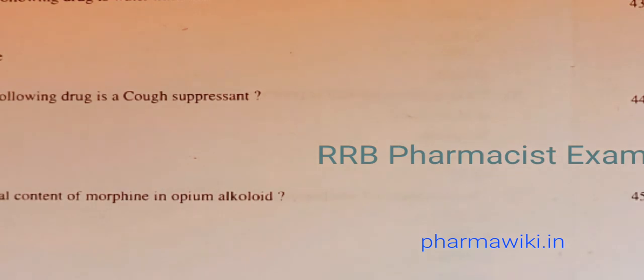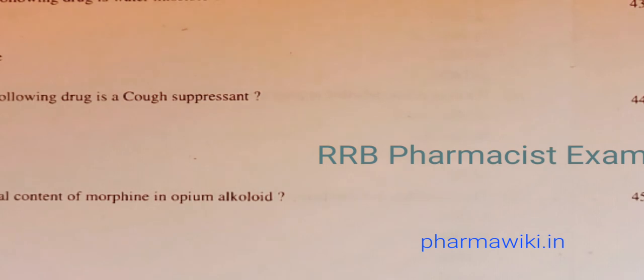Question 36: Which of the following is water miscible — emetine, ergotamine, ergometrine, or caffeine? Ergometrine is the correct answer. Question 37: Which of the following drugs is a cough suppressant? The answer is codeine — codeine is a cough suppressant.